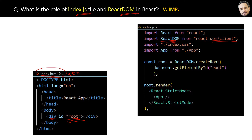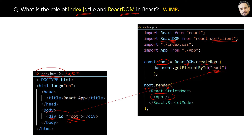This ReactDOM library first uses the createRoot method to get the reference of the root element from the index.html in a variable. Then we use the render method of that root variable to render your React app components and child components in place of the root element. So finally, in place of the div root element of index.html, we now have our App component in the DOM.